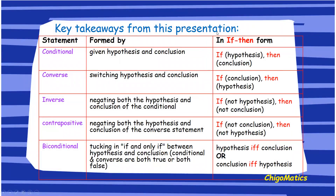The key takeaways: a conditional statement has a hypothesis and a conclusion written in the if-then form. For the converse, switch the hypothesis and conclusion. For the inverse, negate the hypothesis and conclusion. For the contrapositive, negate the hypothesis and conclusion of the converse. For the biconditional, take the hypothesis and conclusion and connect them with 'if and only if' — this works when both the conditional statement and the converse are true.